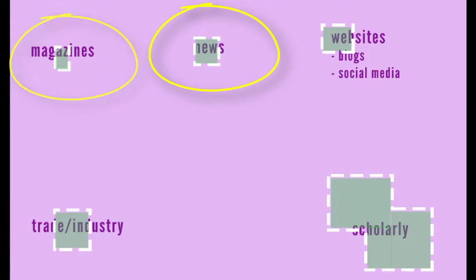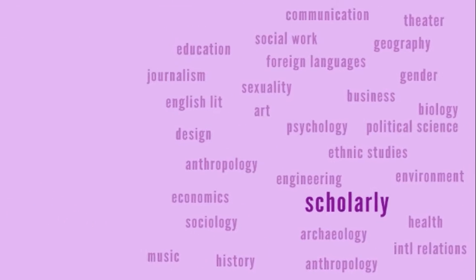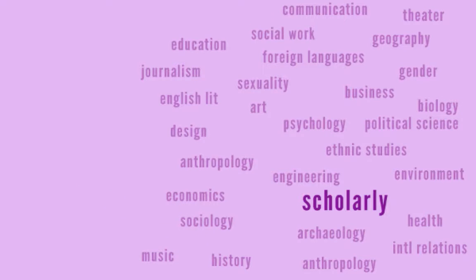So you're missing out on a lot of options in Google Scholar and not really searching everything available. The other problem is that Google Scholar is not good at filtering out different disciplines. In other words, if you're trying to find research from the field of history, Google Scholar has no easy way to ignore articles from other disciplines like sociology, psychology, business, or physics.